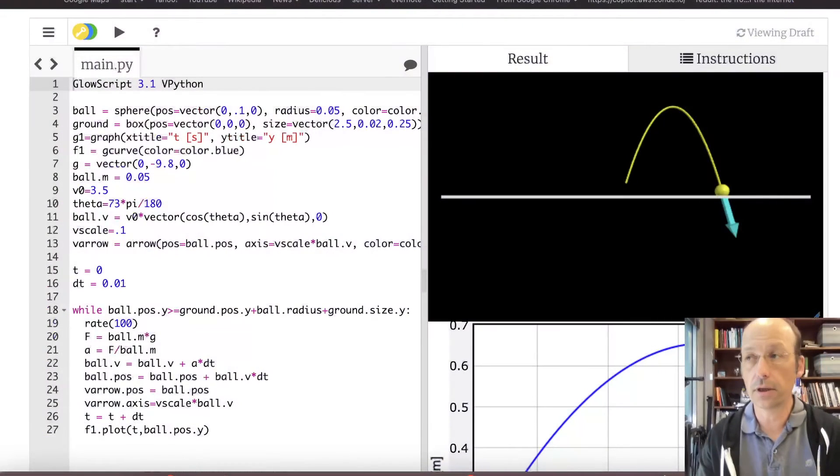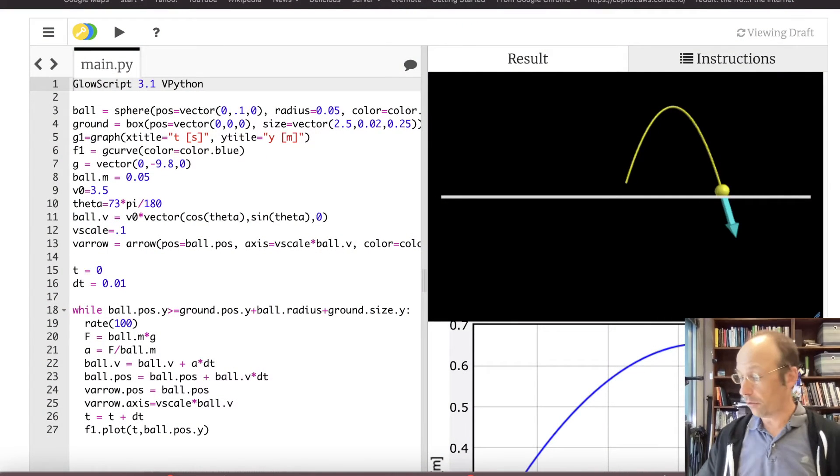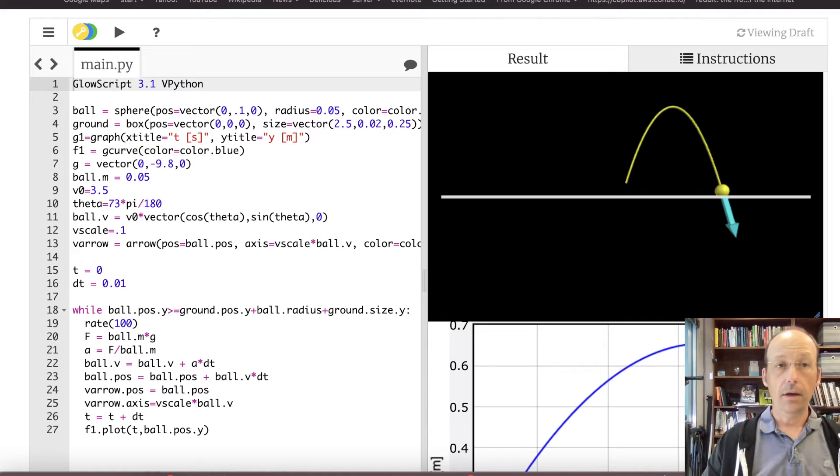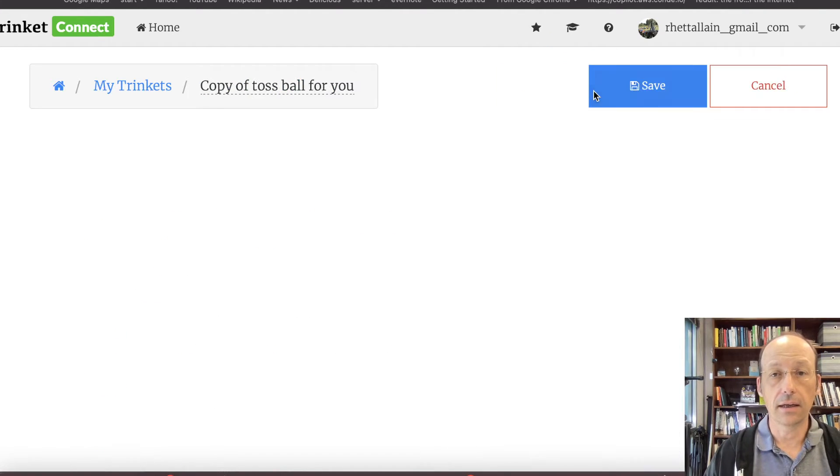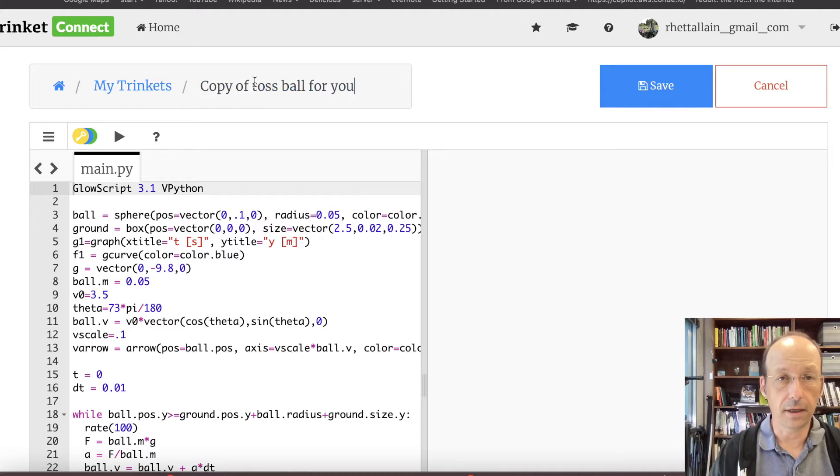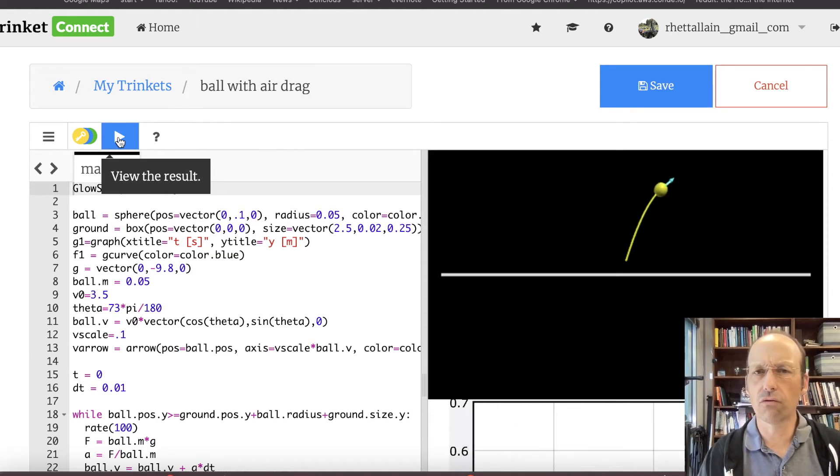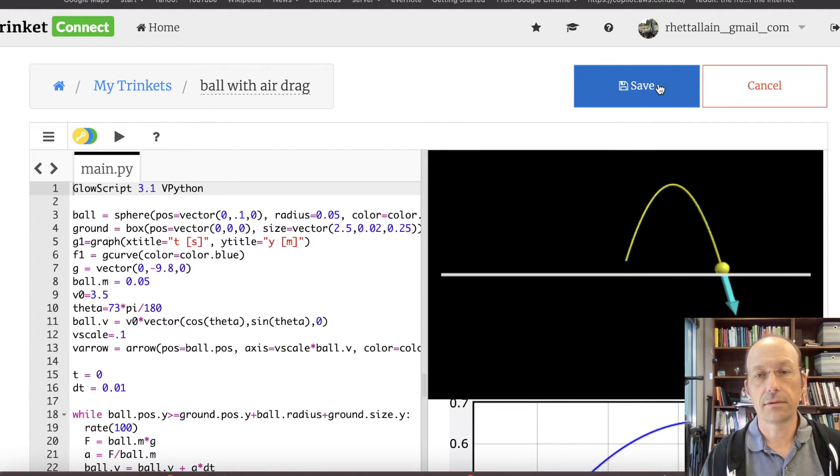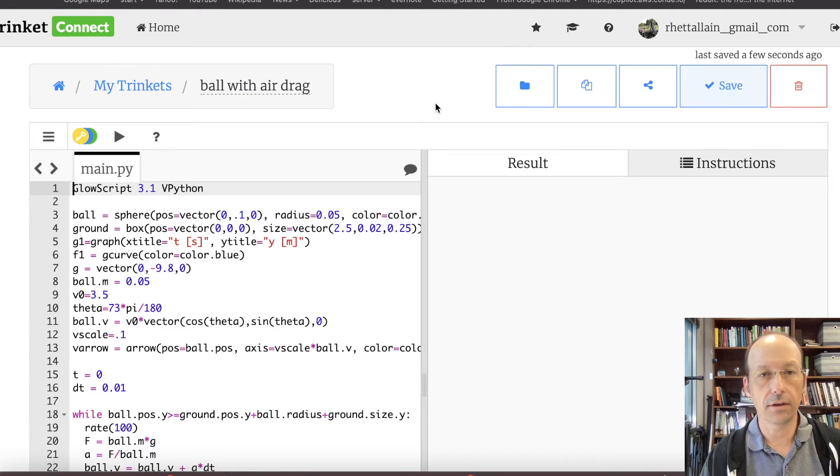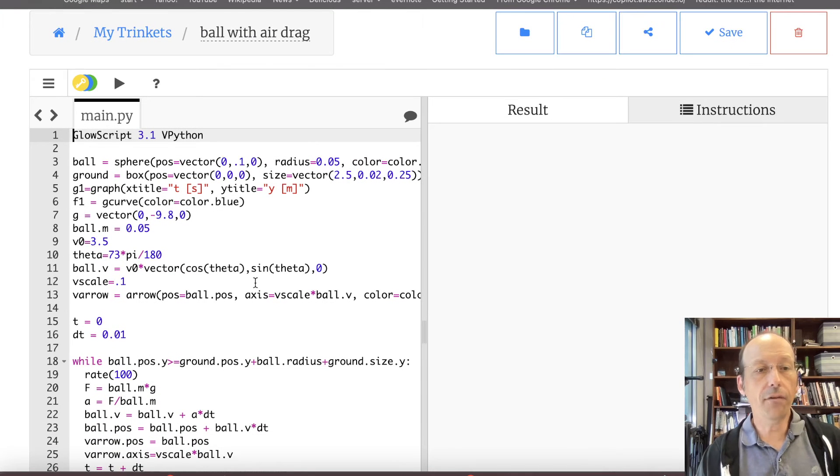Okay, switching back to computer. I'm going to modify this program. I guess I should save it. Let's copy it, because I think I gave you a link to that. Copy it, and let's say ball with air drag. And let's run that. If I don't run it and then save it, weird things happen sometimes.